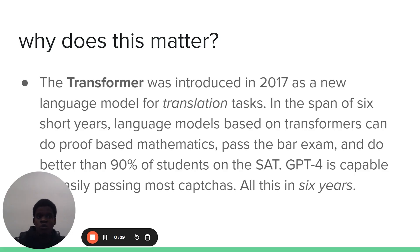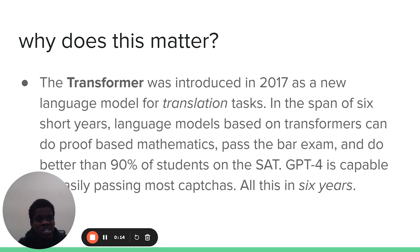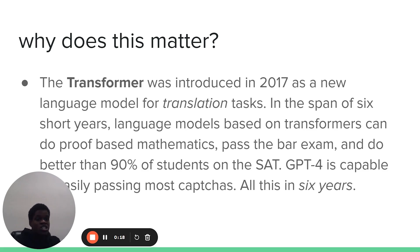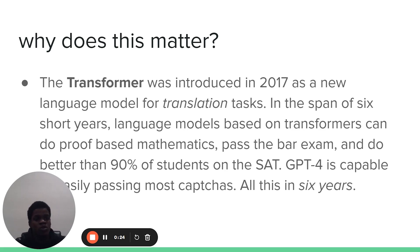So why does this matter? The transformer was introduced in 2017 as a new language model for translation tasks. But in the span of six short years, language models based on transformers can do proof-based math, pass the bar exam, and do better than 90% of students on the SAT. GPT-4 is capable of easily passing most exams. All these new capabilities in just six years.